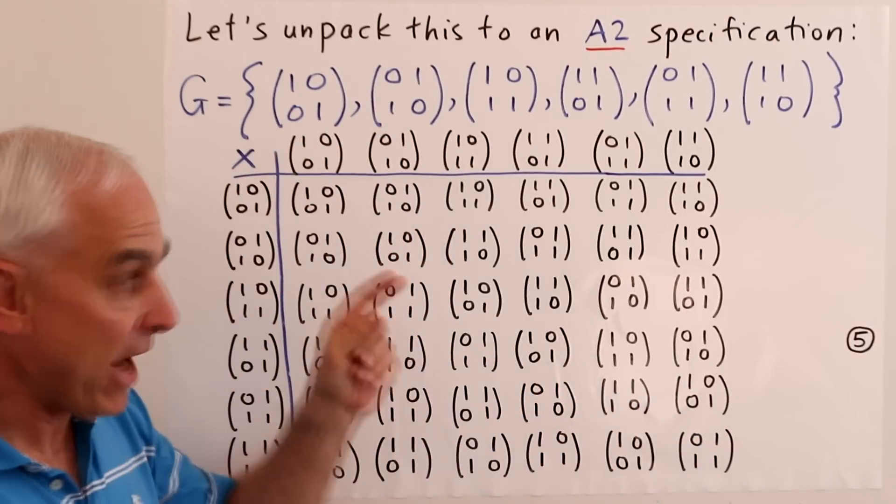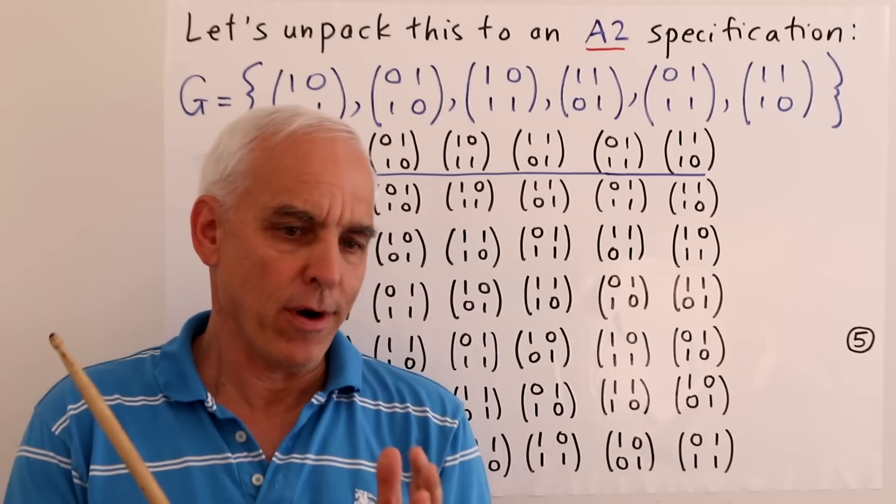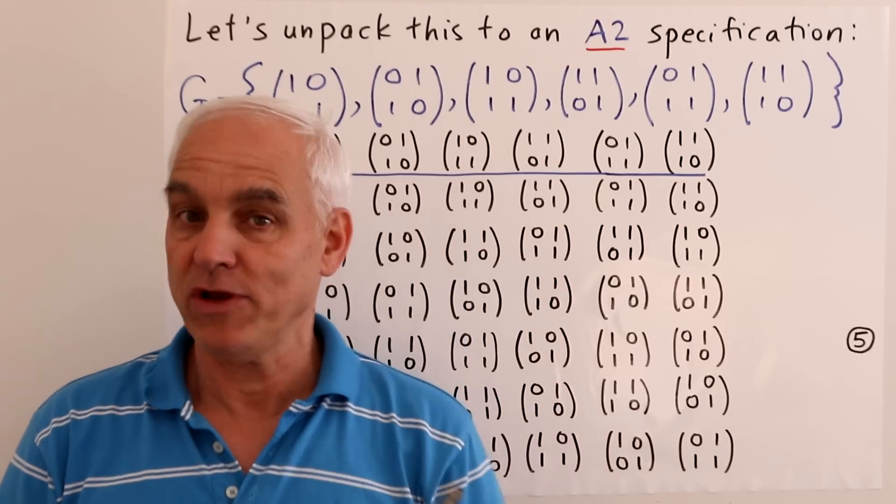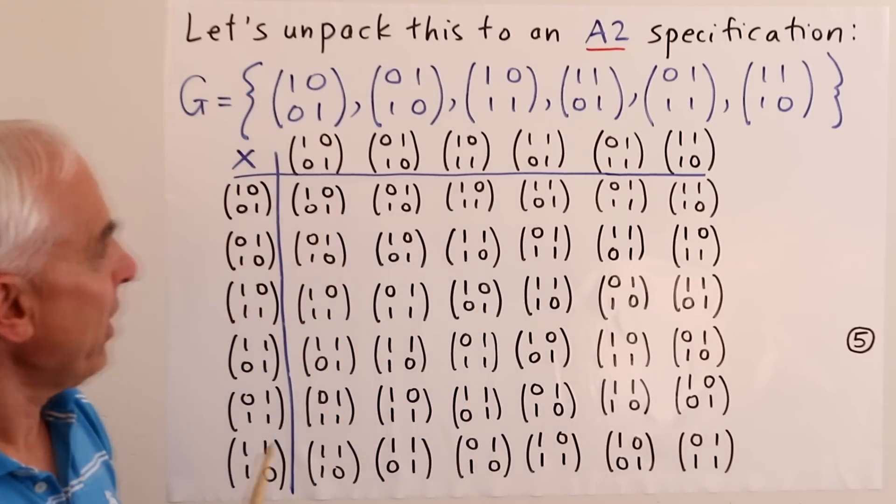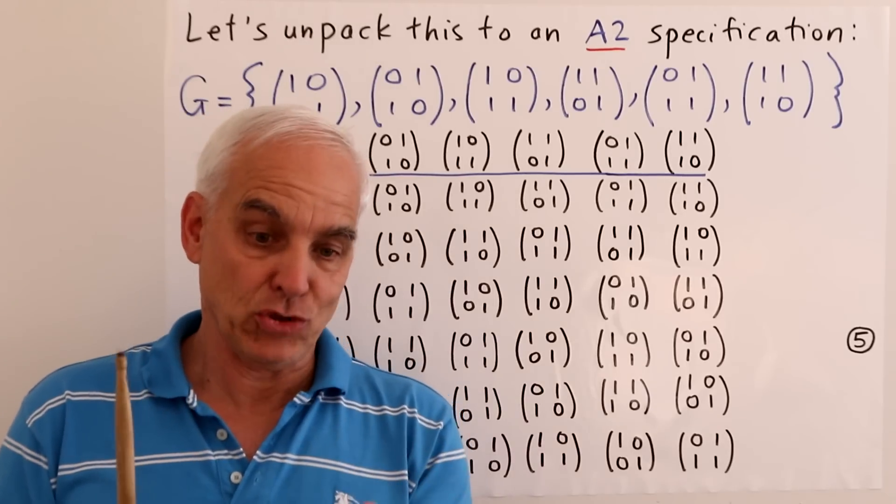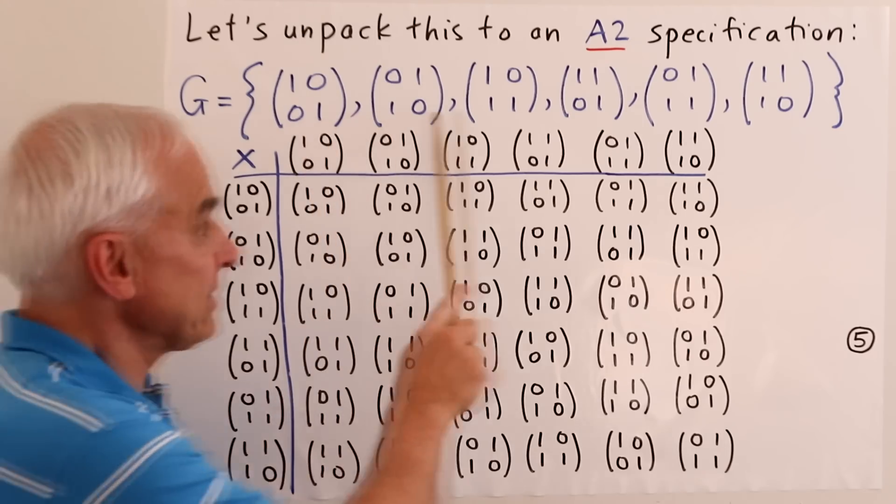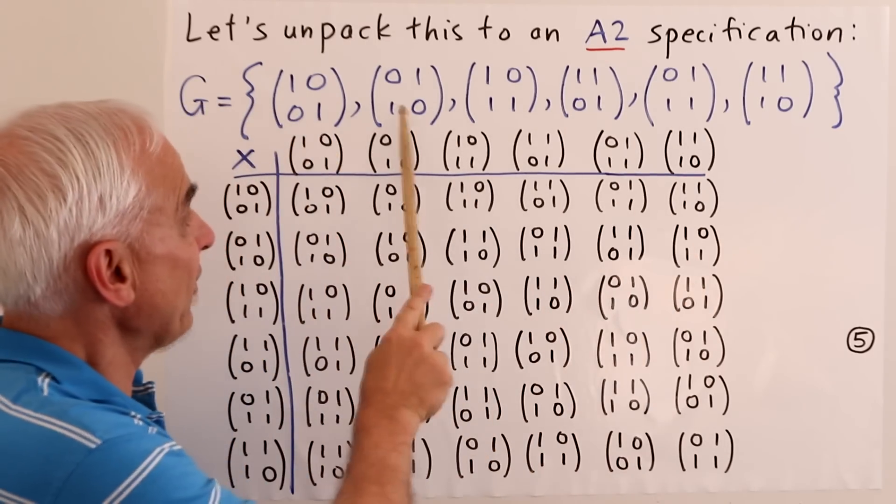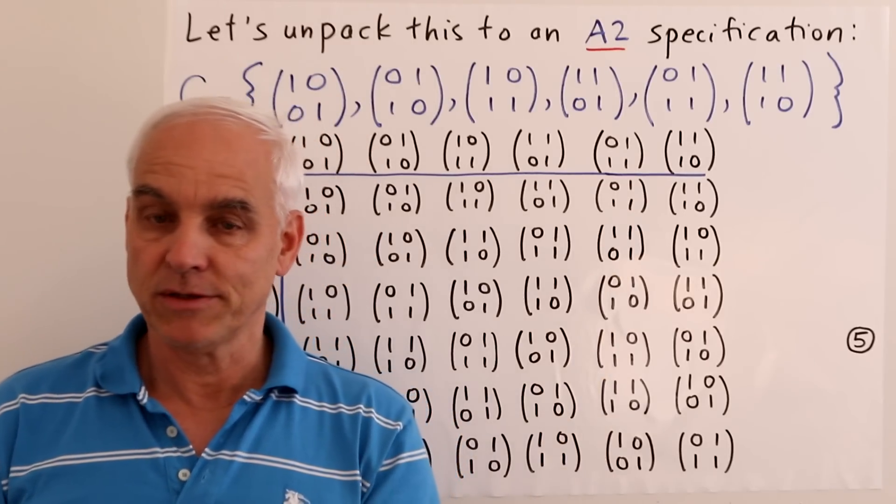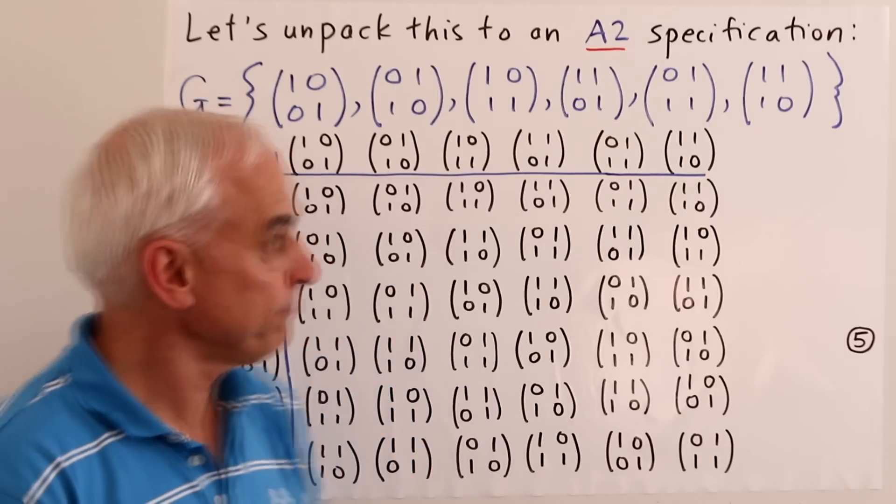So I want you to appreciate that different definitions really do lead to different kinds of group theory. So let's unpack the previous A3 prime kind of definition to a more explicit A2 kind of specification. This is using the language of our previous video. So then what we need to do is we need to determine explicitly, first of all, what actually the elements of this group are. And here, I've actually listed the elements of the group, it turns out that there's exactly six matrices made up of zeros and ones that have determinant one, at least when you're working mod two.